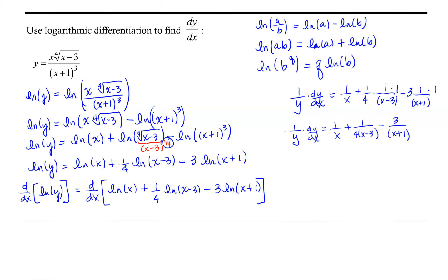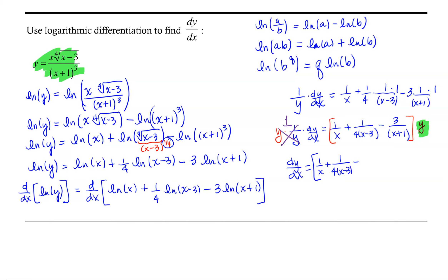At this point, to finish things out, we multiply both sides of our equation by y. On the left-hand side, y times 1 over y gives 1, and we replace y on the right-hand side with the original definition for y. So dy/dx equals 1 over x plus 1 over 4 times x minus 3 minus 3 over x plus 1, times x times the fourth root of x minus 3 all over the quantity x plus 1 cubed.